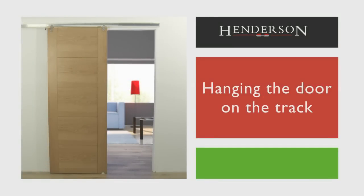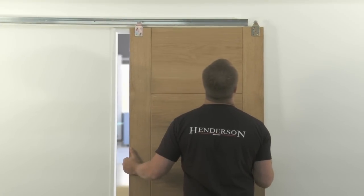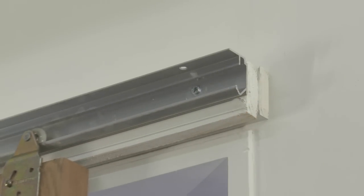Hanging the door on the track: There are two ways of hanging the door on the track. The easiest way is to slide the door in from the end of the track.